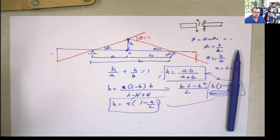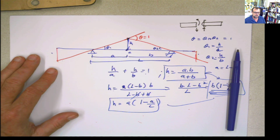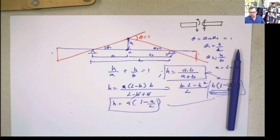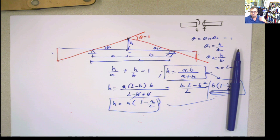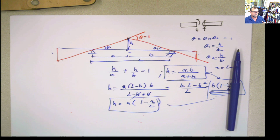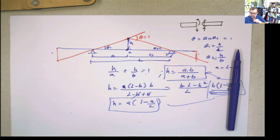And that's it — influence lines, qualitative method, Müller-Breslau. Hope you like it. Keep watching. In the next video I'm going to solve a bunch of problems one after the other, just qualitative, without calculating any values. And in other videos we'll use the Müller-Breslau approach to solve problems numerically. See you later.